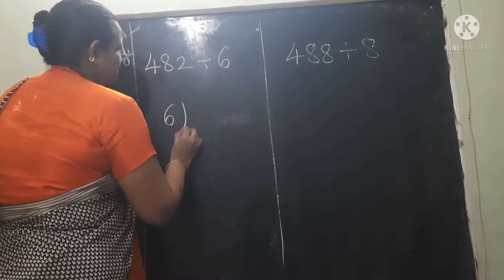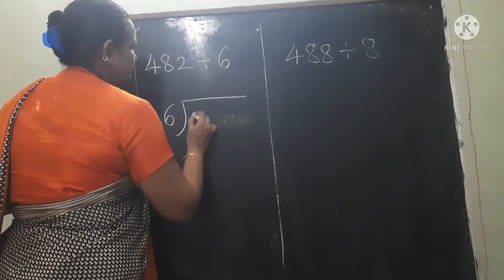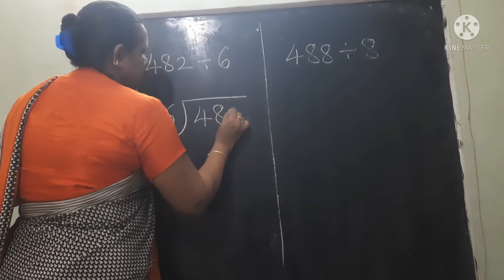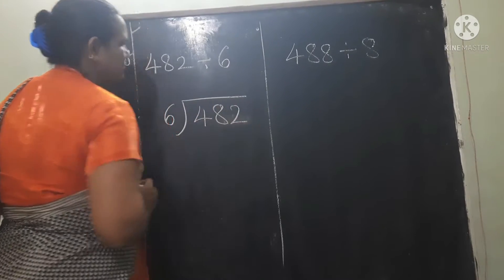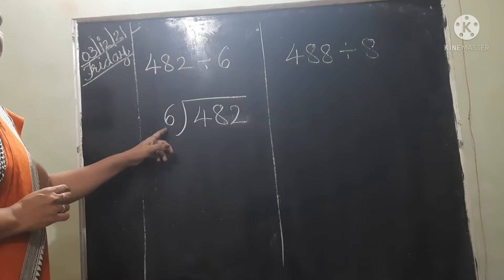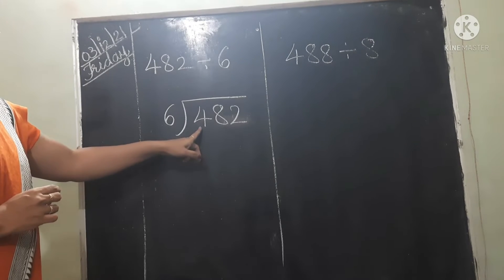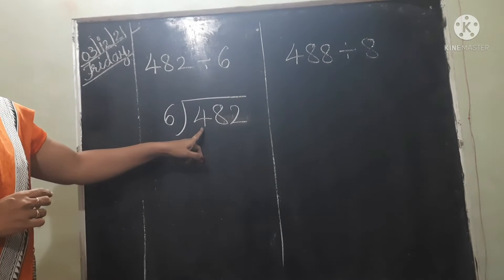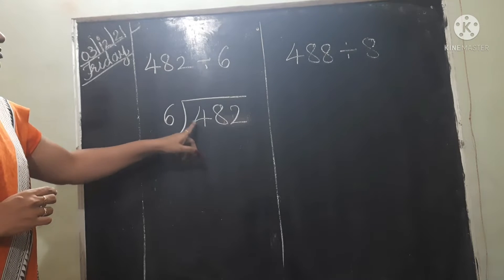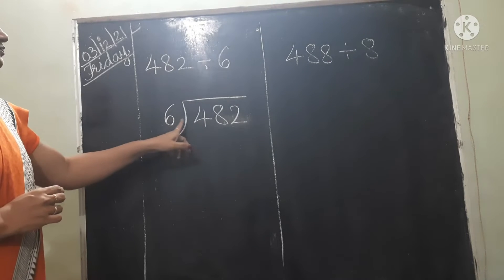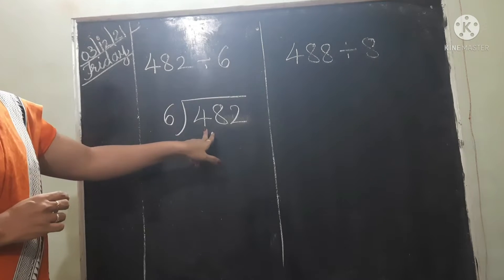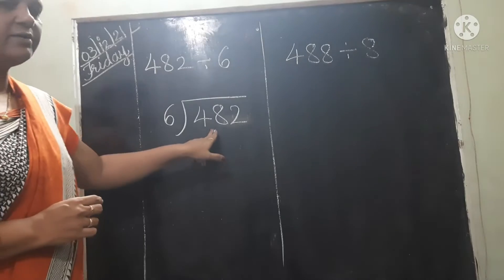Same as before, we have to do it the same way. Now the divisor is 6 and the dividend single number if we take is 4, so 6 is bigger than 4, so here we have to take 2 digits.